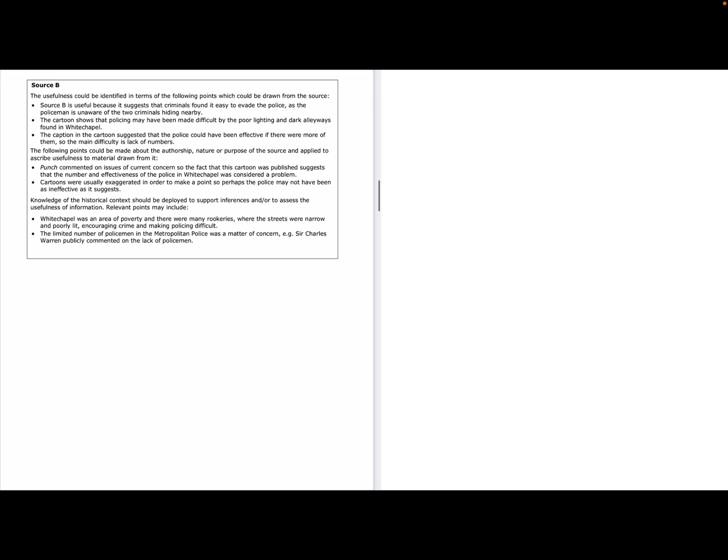Knowledge of the historical content should be deployed and it says Whitechapel is widely regarded as the most dangerous part of London is policed by H division. Policemen walked a specific beat being checked by their sergeant at regular intervals. Then it does the same for source B. Usefulness could be identified in terms of following points which could be drawn from the source. Useful because it suggests that criminals found it easy to evade the police as policemen are unaware of the two criminals hiding nearby. The cartoon shows the policing may have been difficult by poor lighting and dark alleyways found in Whitechapel. The caption in the cartoon suggests the police could have been effective if there were more of them so the main difficulty is the lack of numbers.